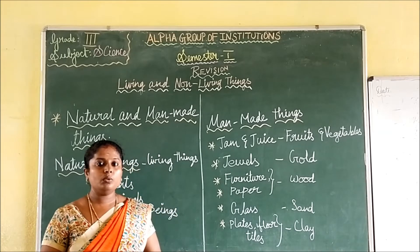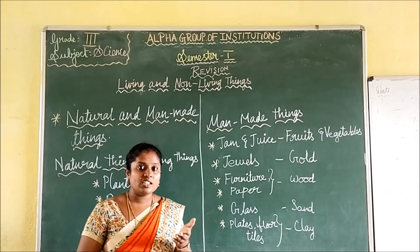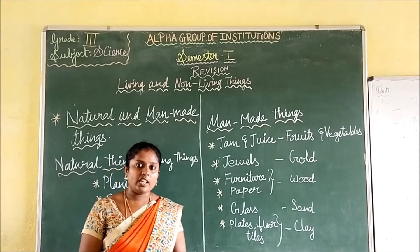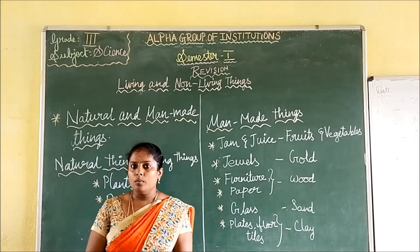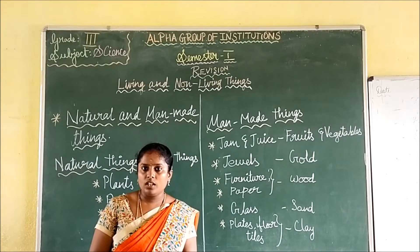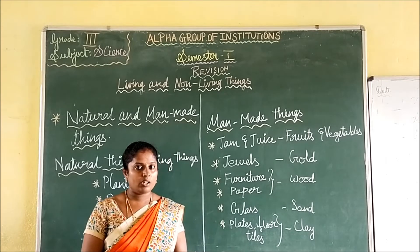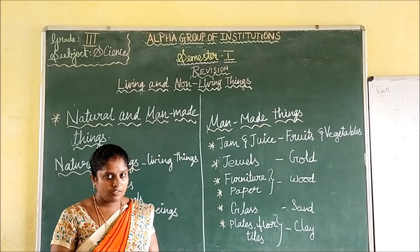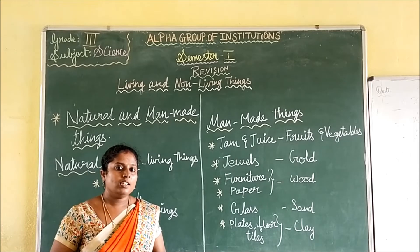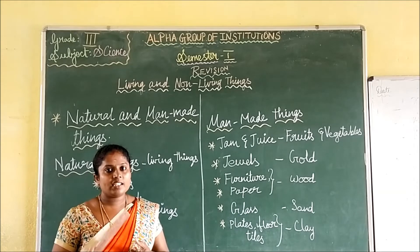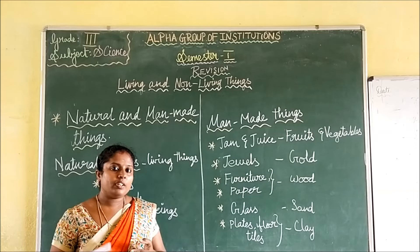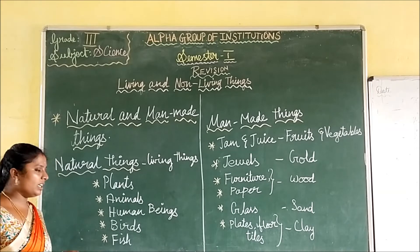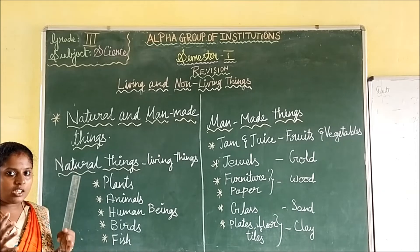In natural things we differentiate which are living and which are non-living. In natural things, not all natural things are living. Mountains, sky, moon, sun, clouds, rivers — these are non-living natural things. Natural living things are plants, human beings, animals, insects, birds, and fish. So in natural things we have both living natural things and non-living natural things.